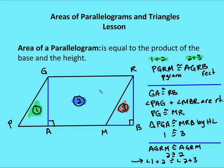I know that GA is congruent to RB because the altitude is the same from G to A as it is from R to B as I extend line P through M to B. I know that angle PAG and angle MBR are both right angles. I know that PG is congruent to MR because opposite sides of a parallelogram are congruent. So triangle PGA — triangle 1 — is congruent to triangle MRB — triangle 3 — by the HL postulate. So area 1 is congruent to area 3 by HL. And if the triangles are congruent, then the areas are going to be the same.